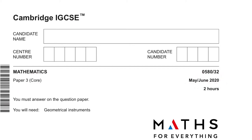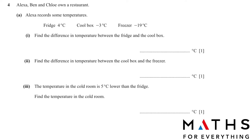Alexa, Ben and Chloe own a restaurant. Alexa records some temperatures for the fridge, cool box and freezer. Find the difference in temperature between the fridge and the cool box. To find the difference we subtract the small value from the big value. 4 degrees Celsius is positive, so it is bigger than the cool box which is negative 3 degrees. Difference means you subtract: 4 minus minus 3 gives 7 degrees Celsius.